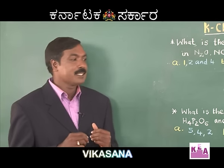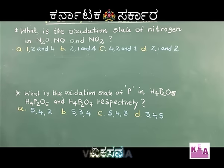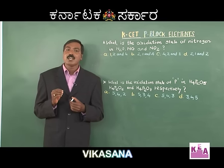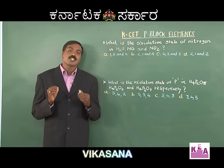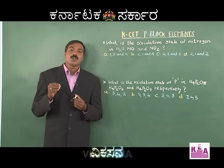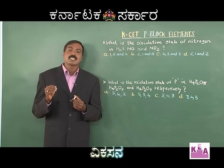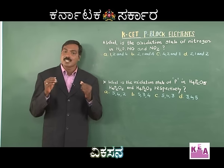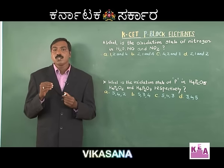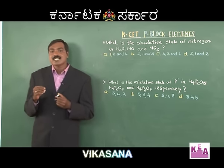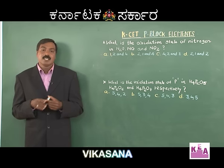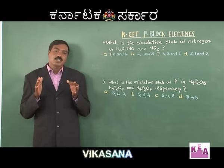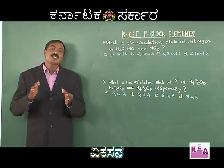How do I answer this? What is the oxidation state of nitrogen in N₂O, NO, and NO₂? Let me give you a fair idea about the oxidation states of nitrogen. Nitrogen can exhibit a maximum oxidation state of +5 and the lowest oxidation state is -3. The range of oxidation state of nitrogen is from -3 to +5.